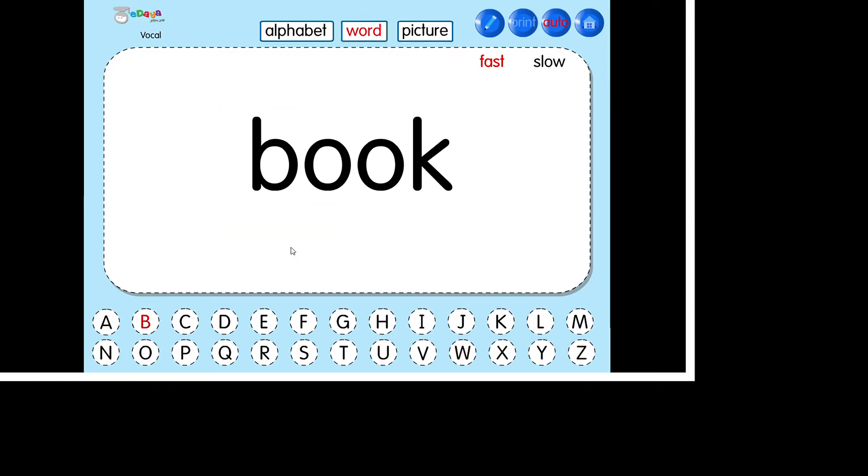A. B. Egg. Book. Candy. Ant. Arm. Egg. Book. Candy. Cake. Duck. Dolphin. Ear. Eye.